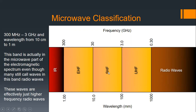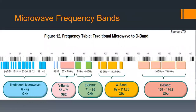We can also classify microwave frequencies into traditional bands: V-band, E-band, W-band, and D-band. These are all basically used for communication. Wi-Fi, cell communication — they're all broadcasting and receiving in the microwave part of the spectrum.